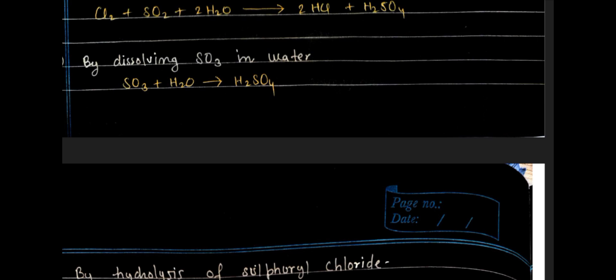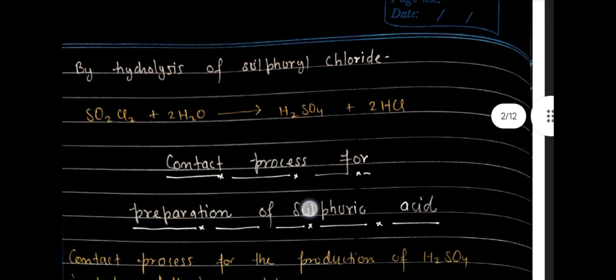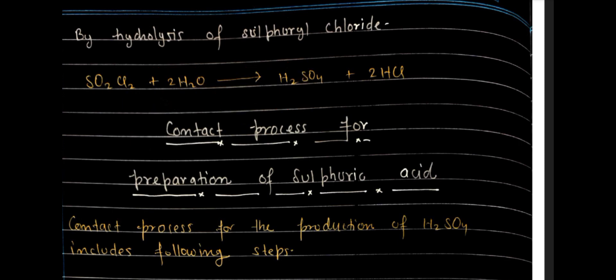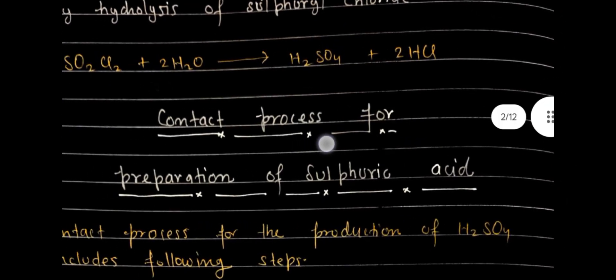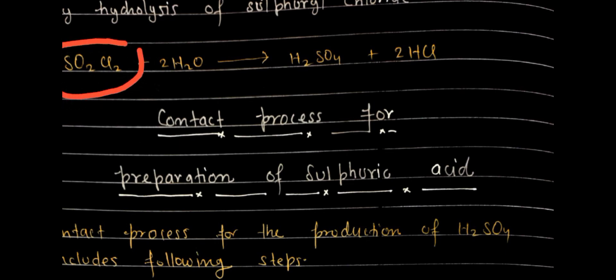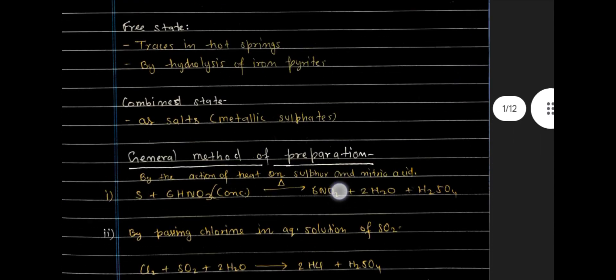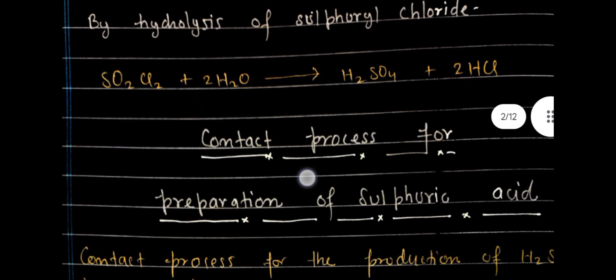Third, by dissolving sulfur trioxide into water, we get sulfuric acid. The fourth method is by hydrolysis of sulfuryl chloride — SO₂Cl₂. By the hydrolysis of SO₂Cl₂, you can obtain sulfuric acid and hydrochloric acid. You must practice the chemical reactions involved in all four methods.